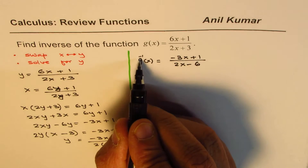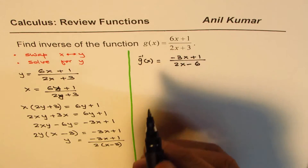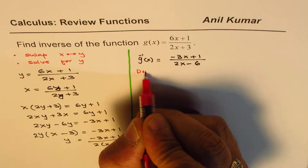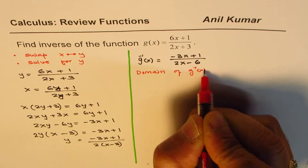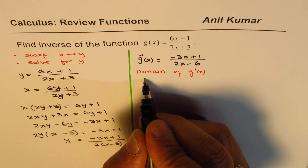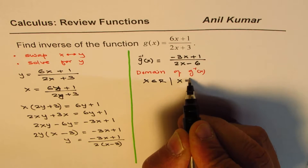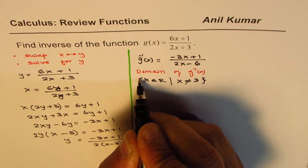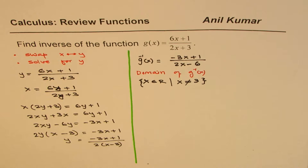Now let us find the domain and range of this inverse function. For the domain, the denominator cannot be 0. So the domain is x belongs to real numbers such that x is not equal to 6/2, which is 3. So x cannot be 3, as that would make the denominator 0.